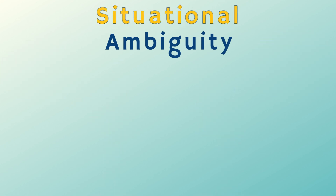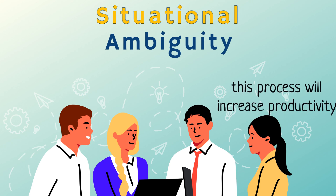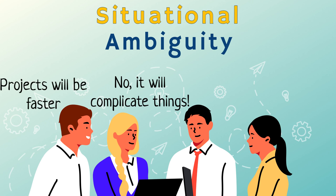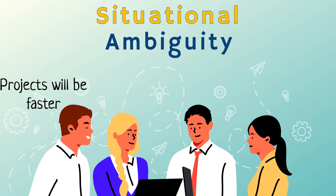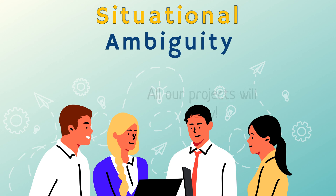The second category of ambiguity is situational. Situational ambiguity surfaces when more than one outcome is possible. For example, a new process is introduced to work, and there will be ambiguity about the outcome or effect of this process on the progress of work.